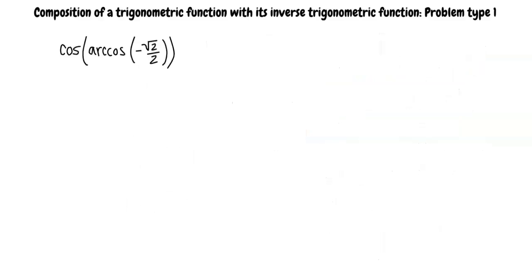Note that this problem can also be written as this since arc cosine and cosine inverse are both notations that we use to denote the inverse of cosine. To start these problems, we first solve what is inside the parentheses. In this case, arc cosine of negative root 2 over 2.